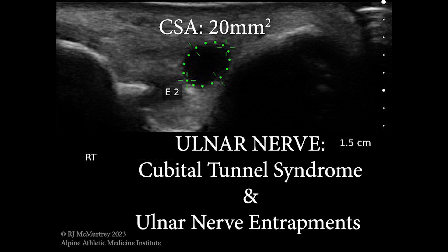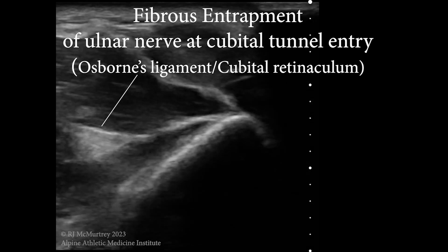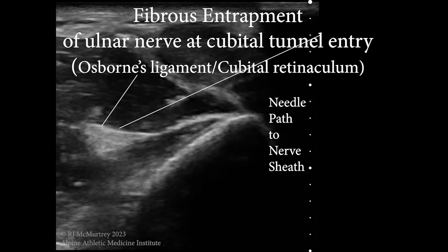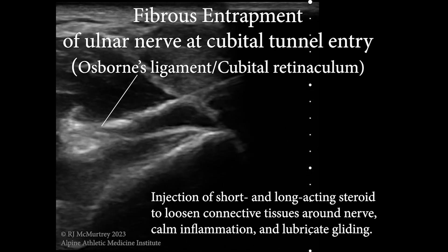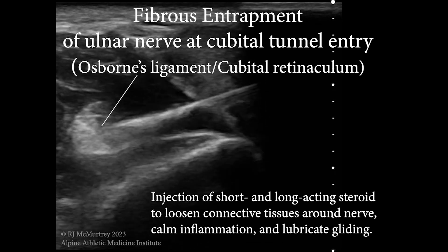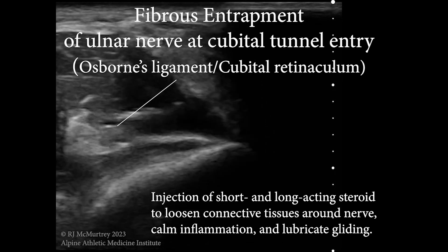On imaging this was very apparent, and it turned out that the nerve was entrapped just at the entry to the cubital tunnel under a ligament called Osborne's ligament, also known as the cubital retinaculum. With this I did a simple injection — this one was in-plane, though you can do them in-plane or out-of-plane with ultrasound — going under Osborne's ligament and infiltrating the canal and the nerve sheath with a long-acting and a short-acting corticosteroid.